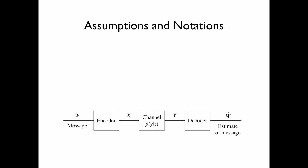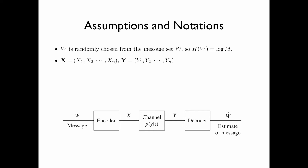Here are some assumptions and notations. We assume that w, the message, is randomly chosen from the message set W, so that the entropy of the message w is equal to log m, where m is the size of the message set. We use bold x to denote the vector (x1, x2, ..., xn), the transmitted sequence, and bold y to denote the vector (y1, y2, ..., yn), the received sequence. Thus, bold x equals f(w); that is, the transmitted sequence is the codeword of the chosen message. Let w-hat equal g(bold y), the estimate of the message w by the decoder.